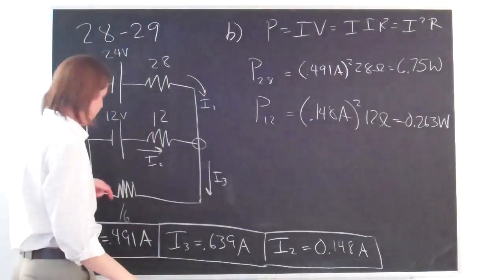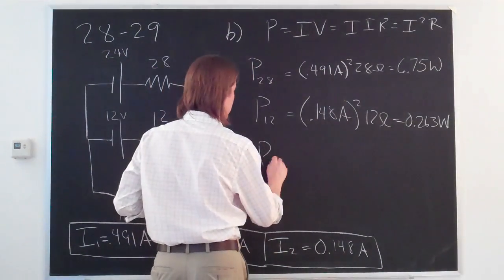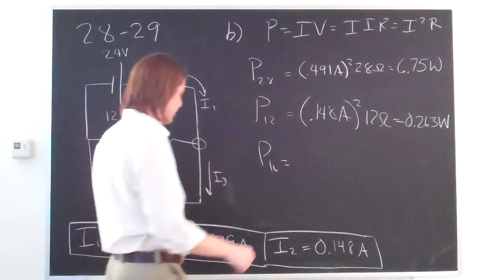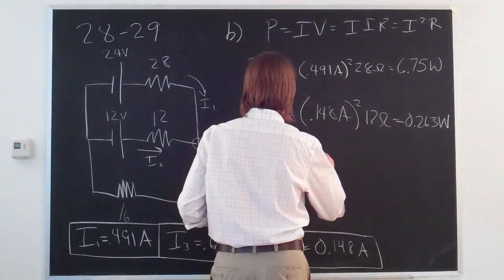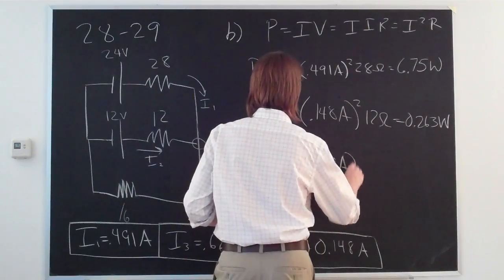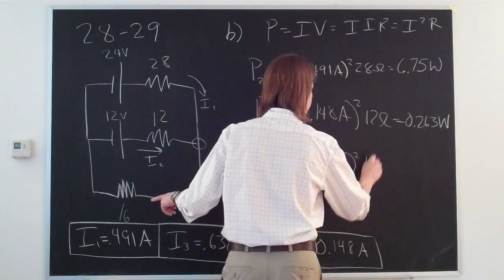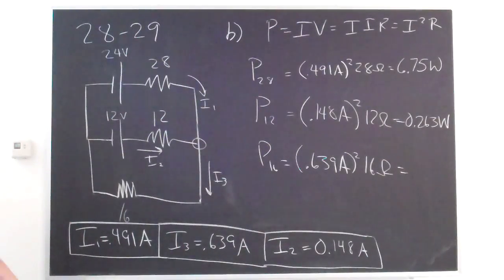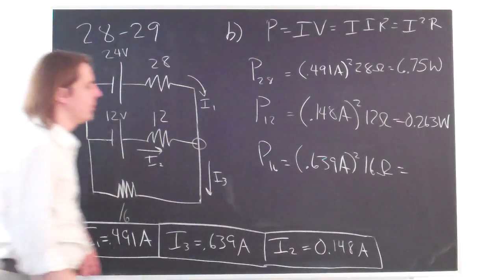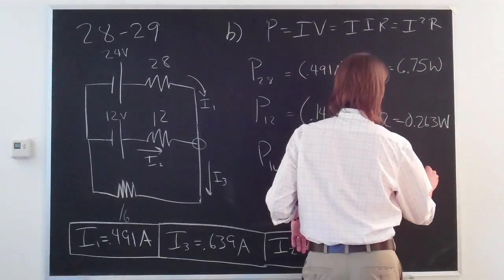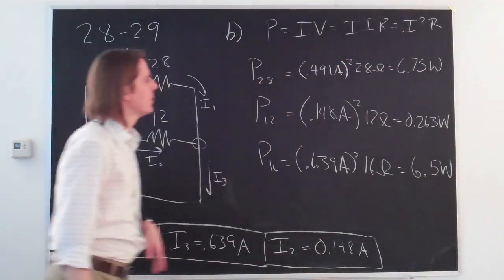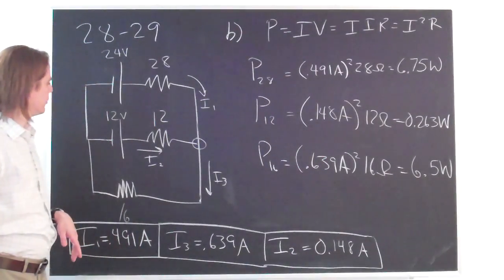And then finally, the power dissipated in the 16 ohm resistor depends on I3. 0.639 amps squared times 16 ohms. And that's larger again, that's 6.5 volts. And those are the answers.